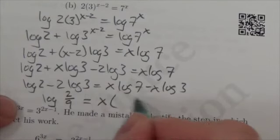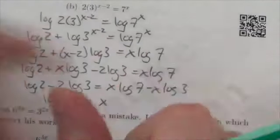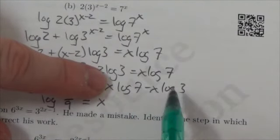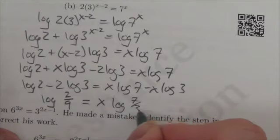I am going to factor the x out of this. I'm going to factor the x out. That's going to leave me with log 7 minus log 3, which is the log of 7 thirds.